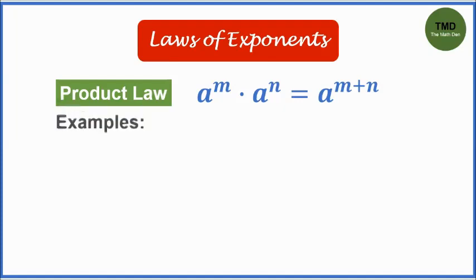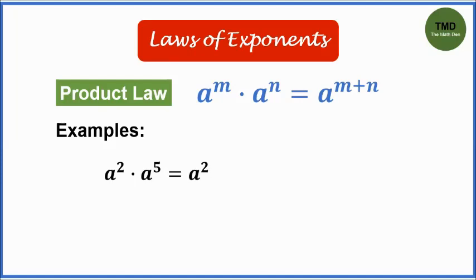Here are the examples. Example number 1: a squared times a raised to 5 is equal to a raised to 7. The common base a is copied, then the exponents are added. 2 plus 5 is 7.